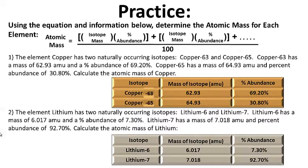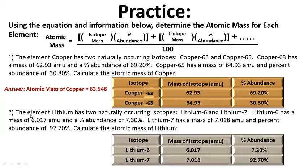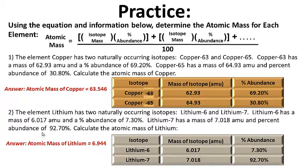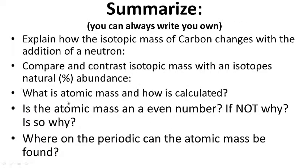Let's see how you did. The atomic mass for copper is 63.546 — you can verify this on the periodic table. For lithium, which has two isotopes — lithium-6 and lithium-7 — the atomic mass is 6.944. Let's go ahead and summarize.